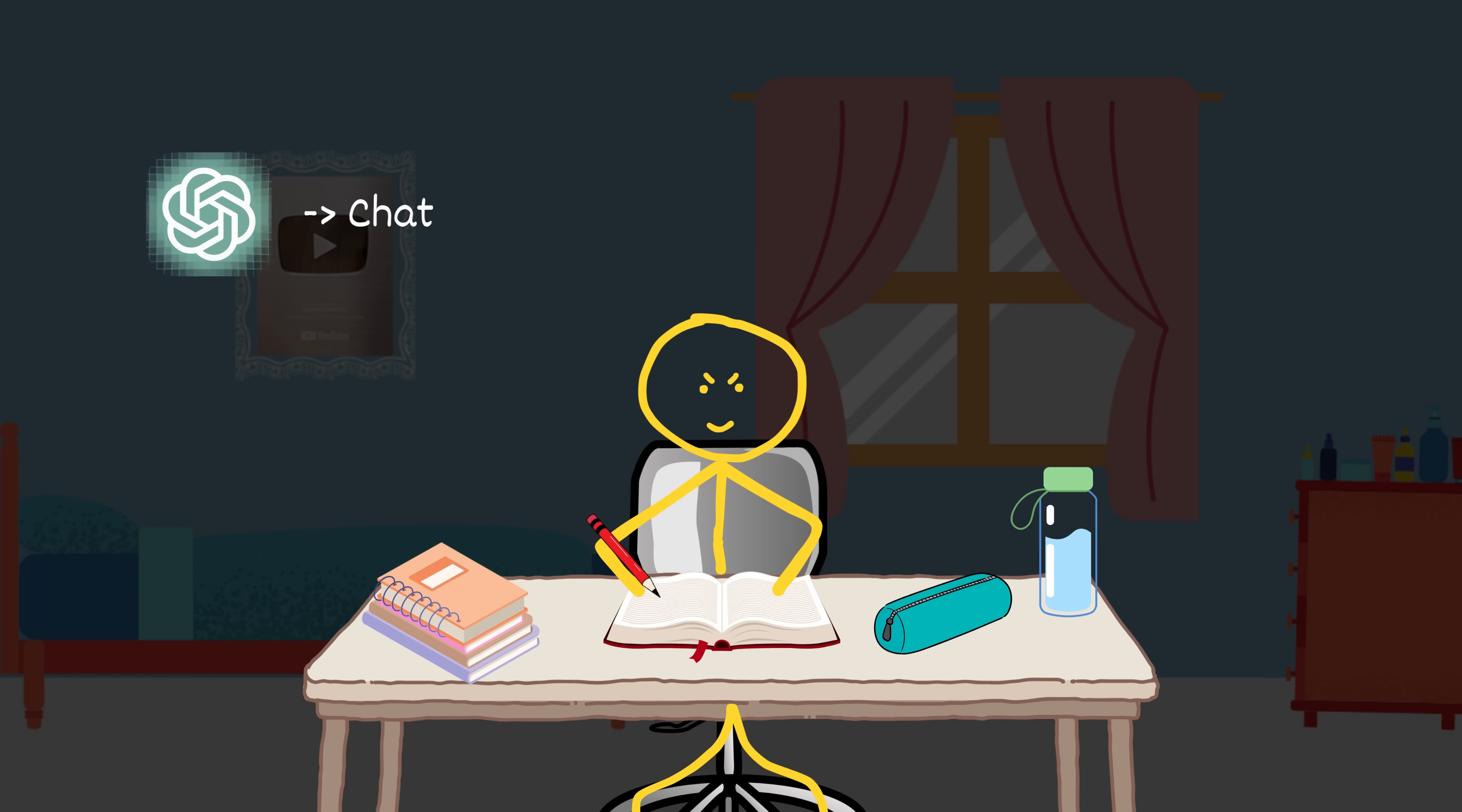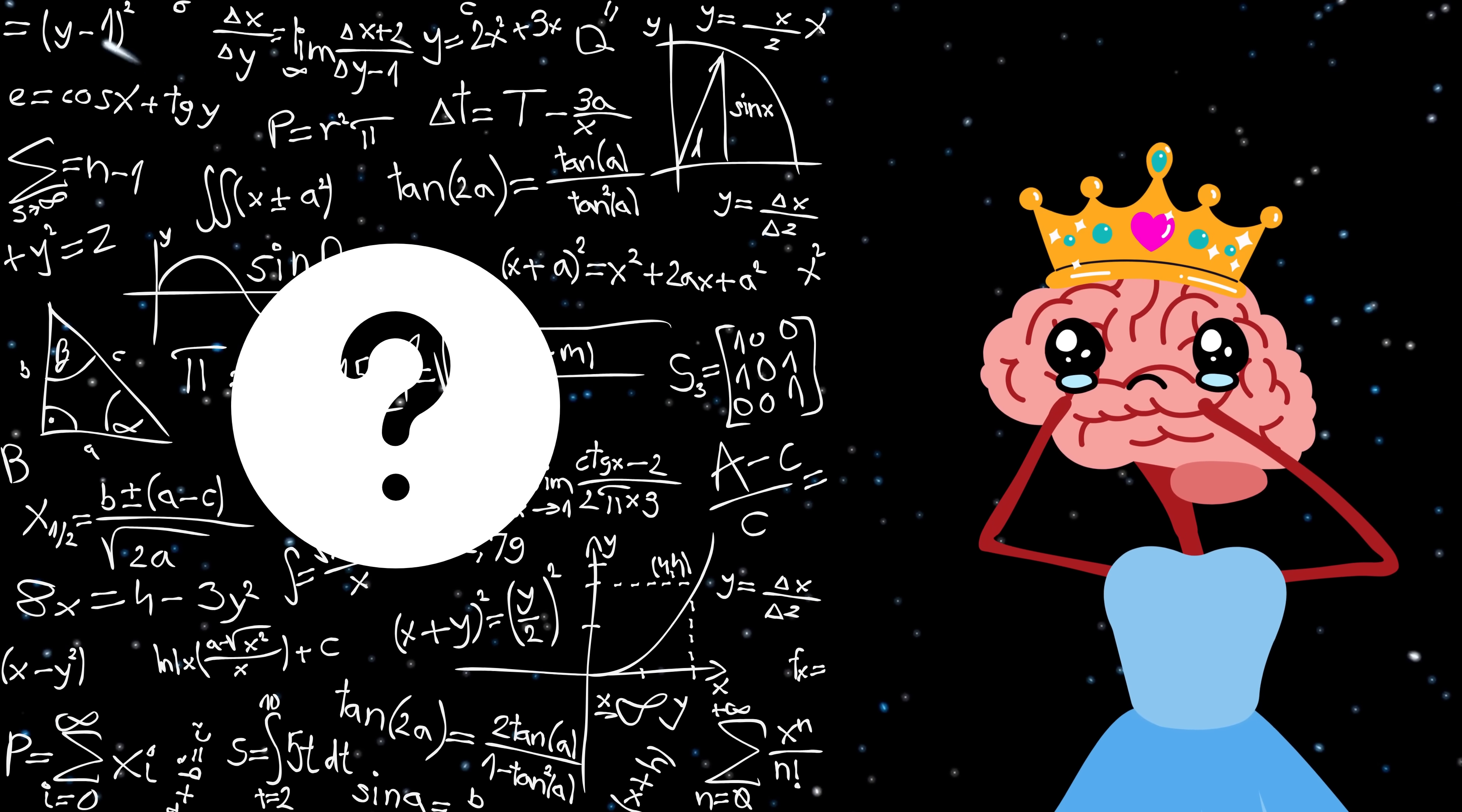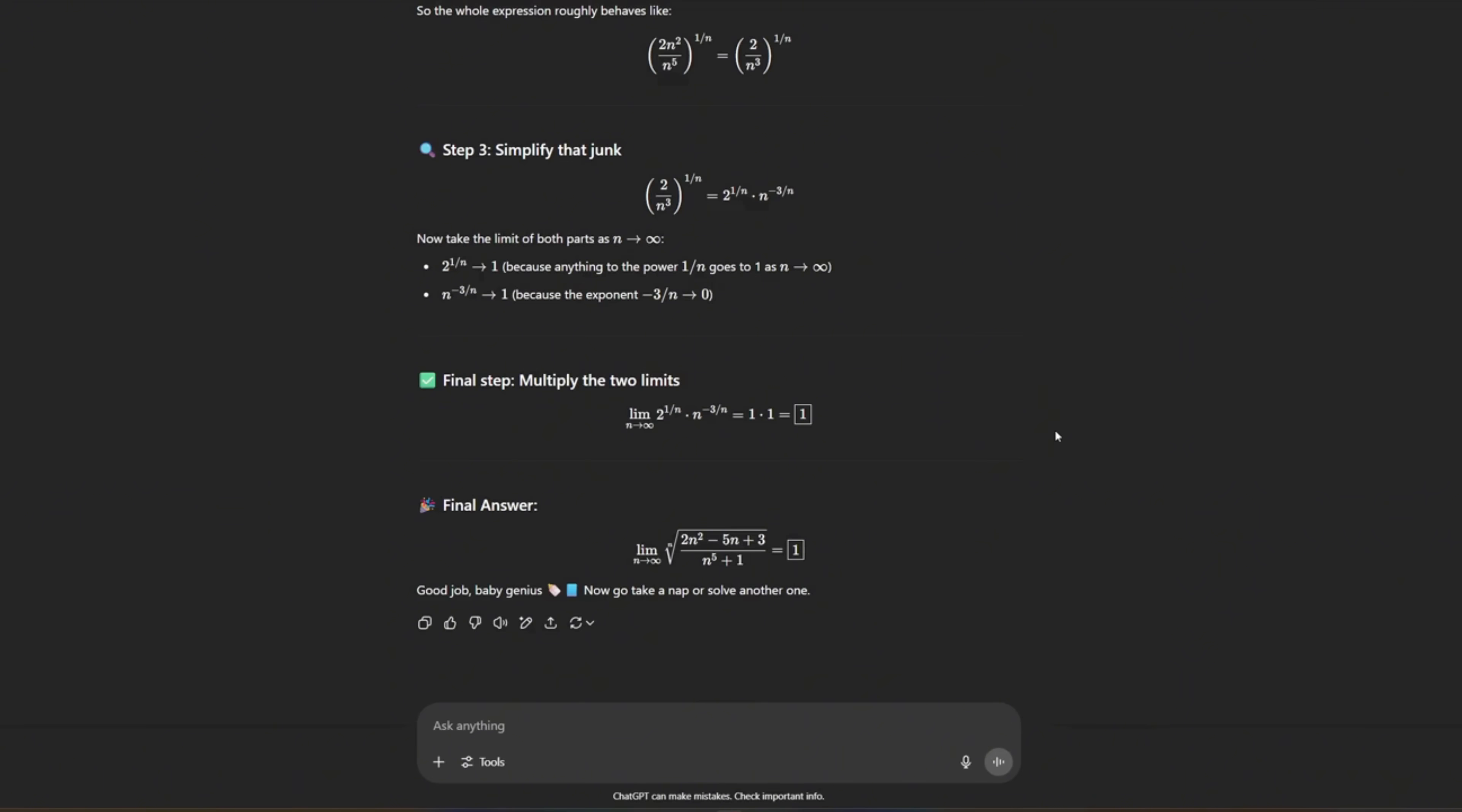Yeah, I said it. Use ChatGPT's hints, do your best, and then compare your pathetic attempt with the real solution. That moment when you realize how far off you were, that's where the actual learning begins. Now, if your brain still can't unfuck the problem, stop suffering and look at the answer. Ask ChatGPT to spoon feed you the steps like the clueless math baby you are. Study that breakdown like your GPA depends on it because guess what? It does.